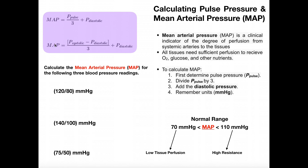We can take the same formula for mean arterial pressure and expand out pulse pressure. The equivalent formula is: we take the difference between the systolic pressure and the diastolic pressure — that's the pulse pressure — divide it by three, and then add on the diastolic pressure. So in order to calculate mean arterial pressure, the first step is to determine the pulse pressure, which is simply the difference between systolic and diastolic pressure. The systolic pressure is always going to be higher than the diastolic pressure, so the numerator of this fraction will always be positive — it will never be negative.